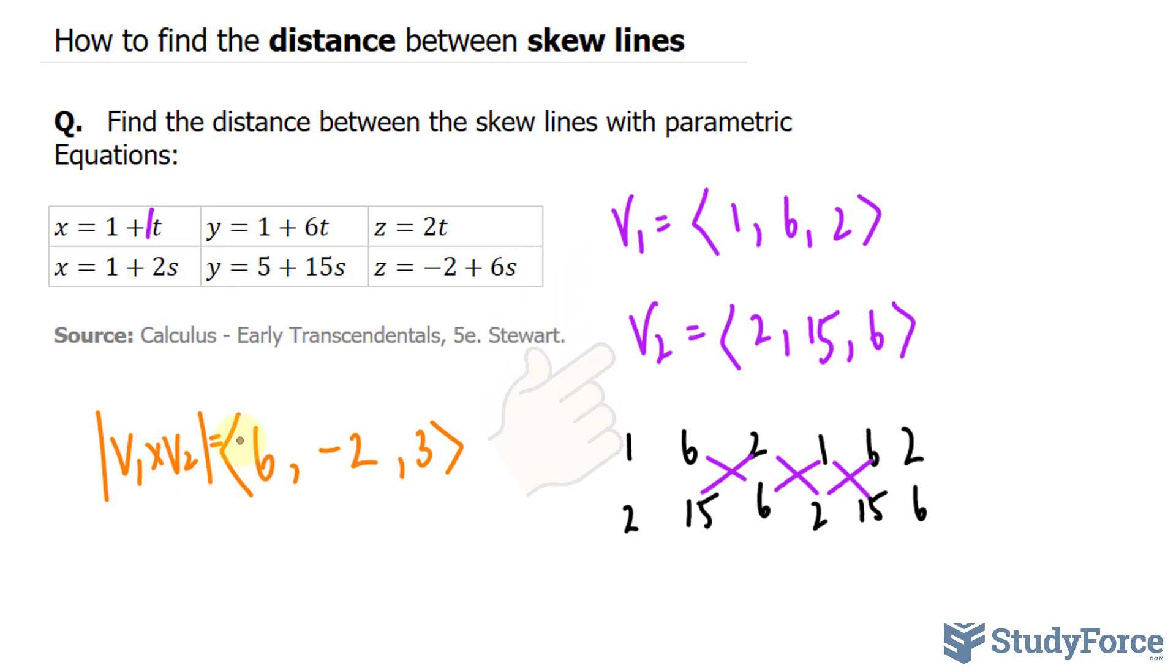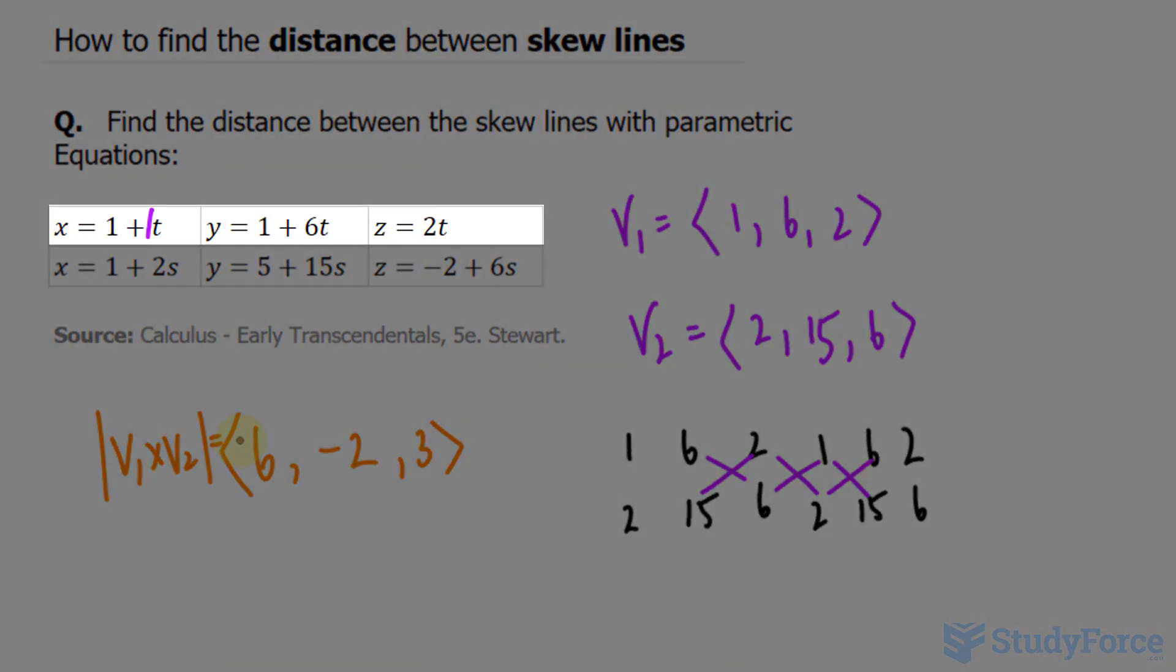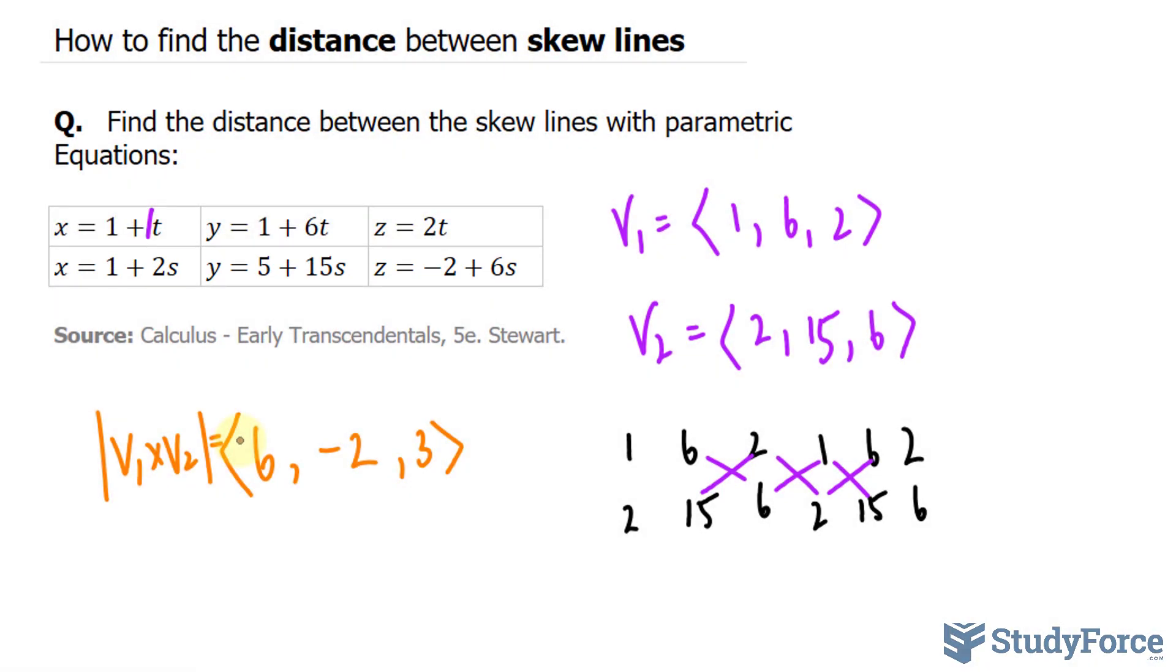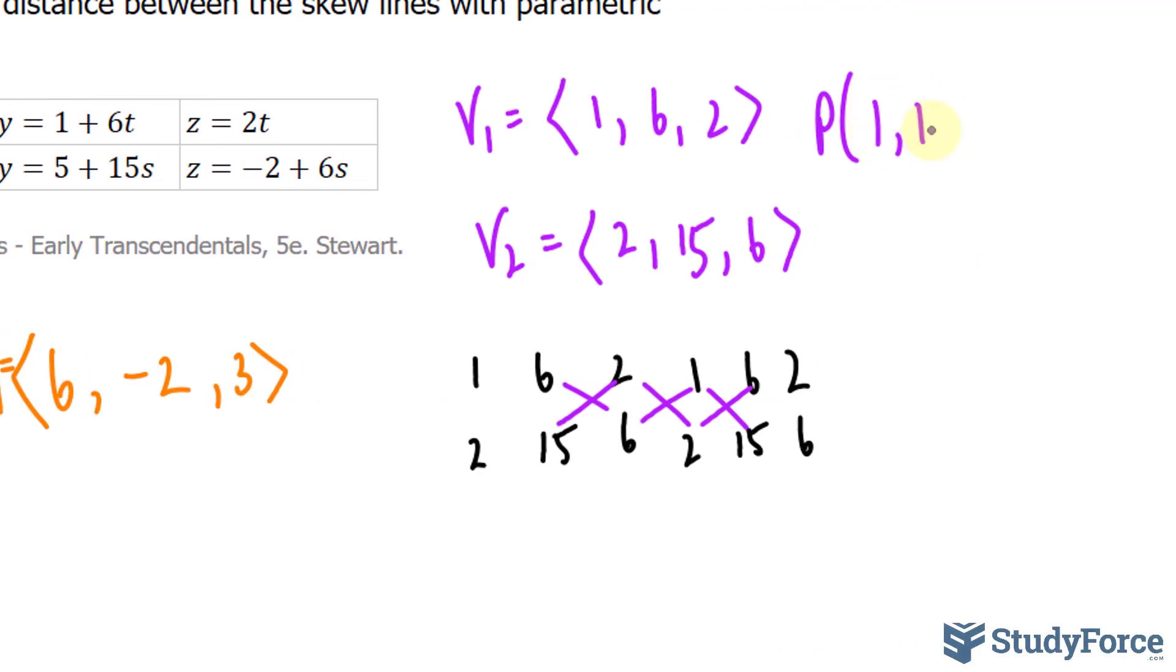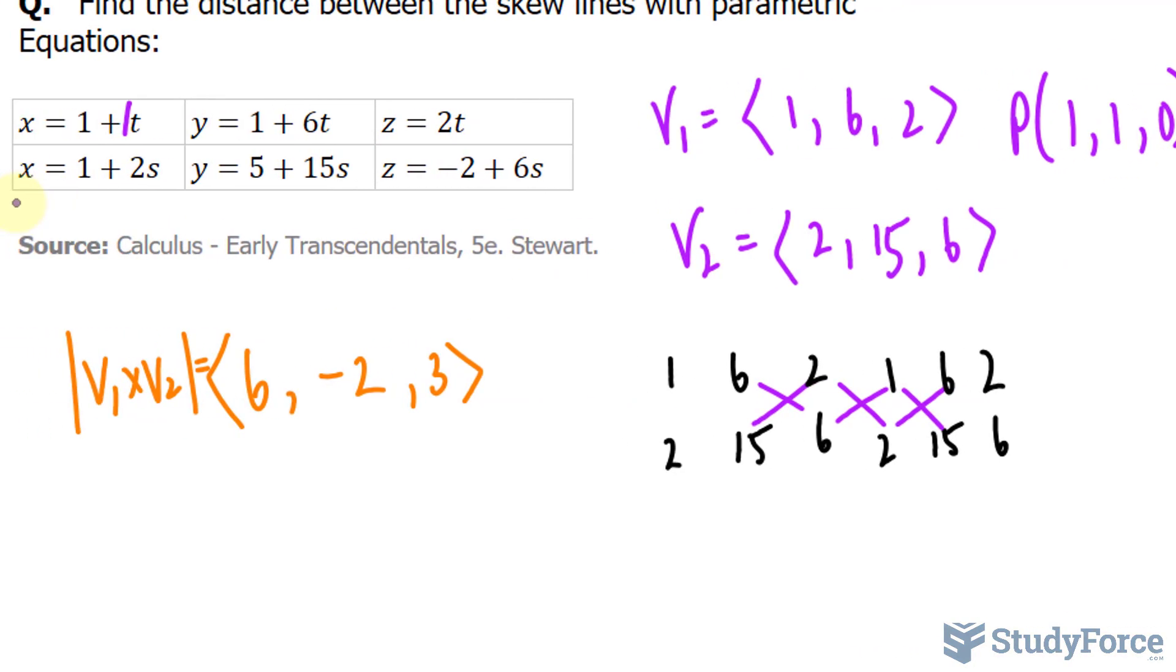The next thing that I want to do before we get into why finding the cross product is important is I want to come up with a point using the parametric equations defined in this line and the parametric equations defined in this line. And all I have to do is set t is equal to 0 and s is equal to 0. That will give me a point. So if I set all of these t's equal to 0, I'll end up with a point along this line that is 1, 1, and 0.